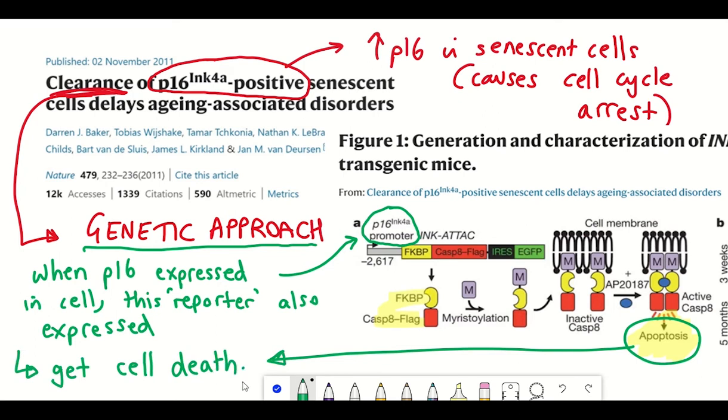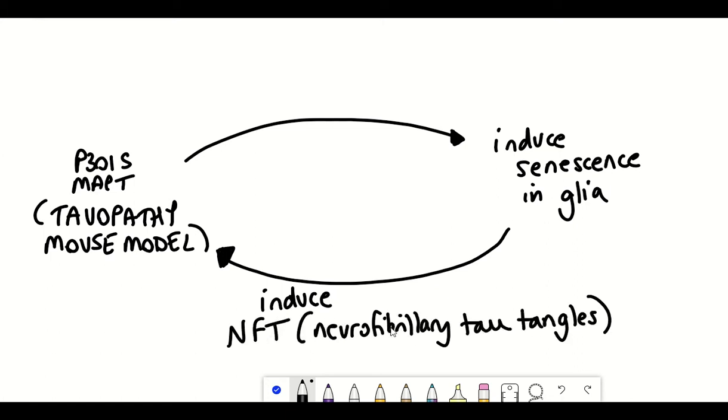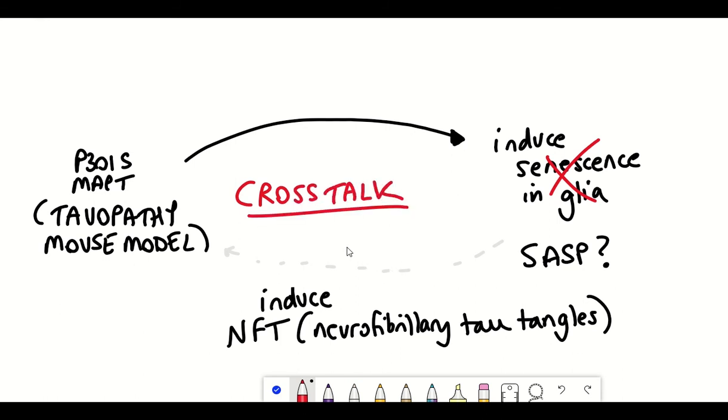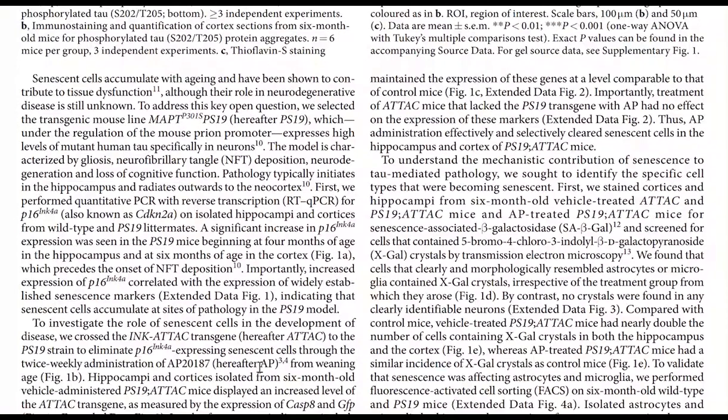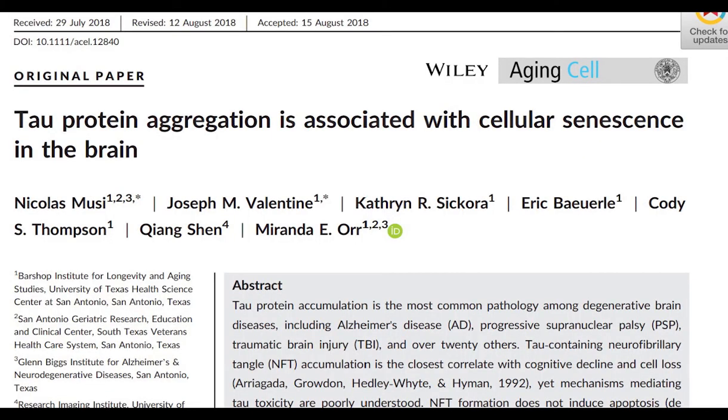The fact that the removal of senescent cells reduced the Alzheimer's disease phenotype suggests that the senescent cells were playing a role in the initiation and progression of this tau-mediated disease, suggesting that senescent cells could be a potential cause of Alzheimer's disease pathology. This is further supported by the fact that they saw the accumulation of these p16 positive senescent glial cells before they saw the deposition of neurofibrillary tau tangles.